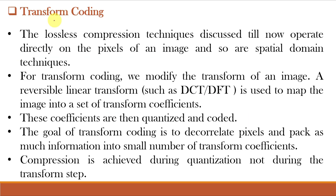Transform coding is based on image transforms — for example, the Discrete Fourier Transform, which we studied during image enhancement in the frequency domain. The term image transform usually refers to a class of unitary matrices used for representing images. Just as a signal can be represented by an orthogonal series of basis functions, an image can also be expanded in terms of a discrete set of basis arrays called basis images.